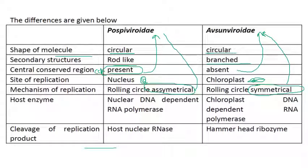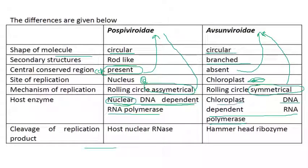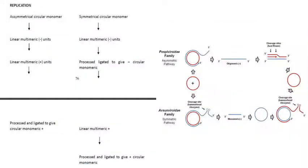The host enzyme for Pospiviroidae is nuclear DNA-dependent RNA polymerase — nuclear because replication happens in the nucleus. For Avsunviroidae it is chloroplast DNA-dependent RNA polymerase. The cleavage of the replication product in Pospiviroidae involves host nuclear RNA, whereas in Avsunviroidae it involves hammerhead ribozymes.